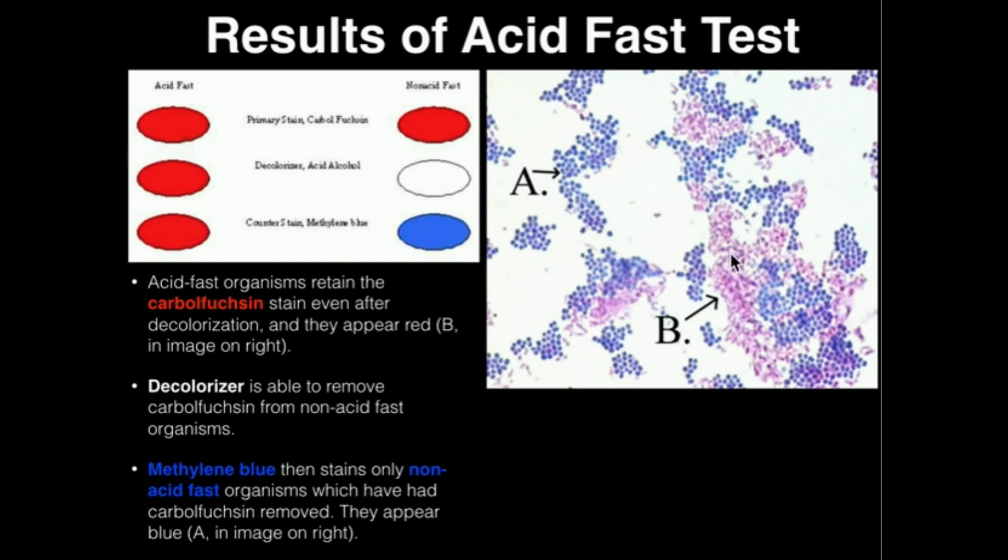Here's a slide depicting a mixture of both of them. Here is A right here. We see blue anywhere where we see blue, so that is going to be a non-acid-fast organism. If we see where we have the red, which here's a good example right here, B, that's going to be an acid-fast organism.